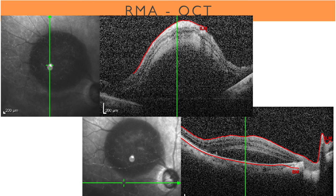Here is an OCT of a macroaneurysm. We see the blood and shadowing under the retina, and further away just fluid in the outer retinal space.